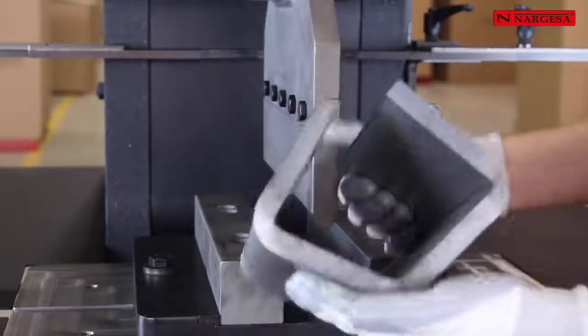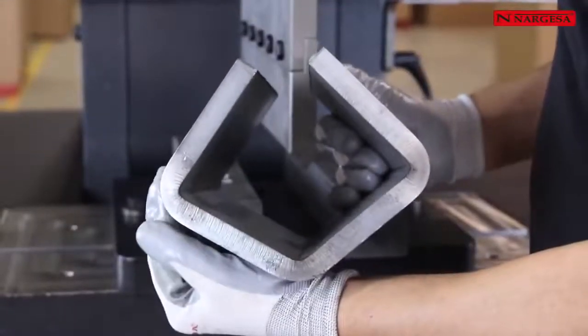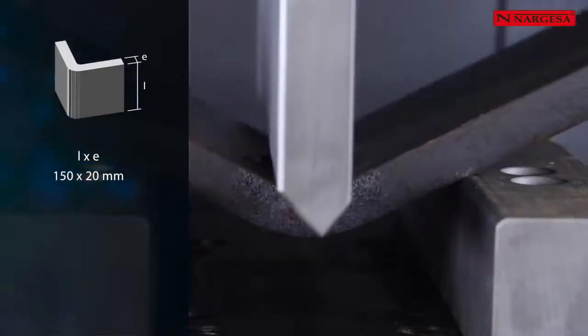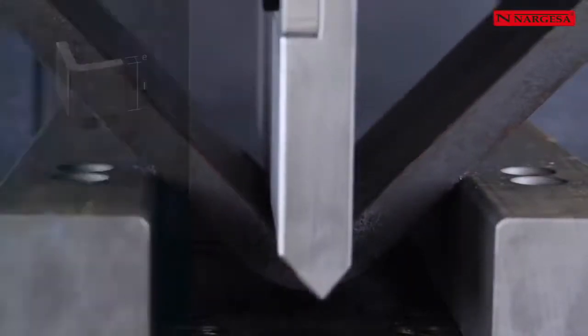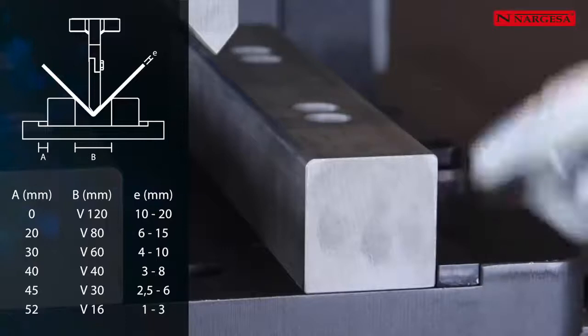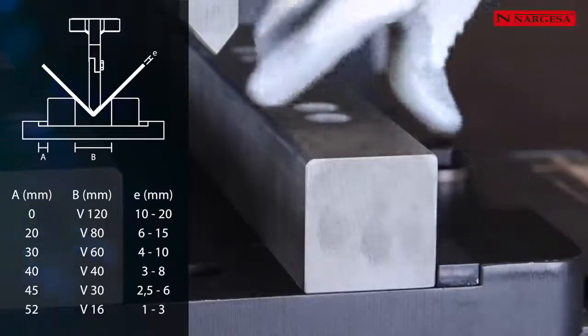When folding parts up to 300 mm, we can use a tool with different openings that allows the folding of sheets from 0.5 mm to 20 mm thick. The die consists of two different radii, a bigger one for thick plates and a smaller radius for smaller thicknesses.